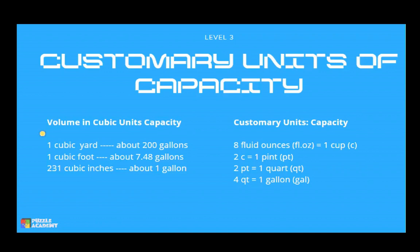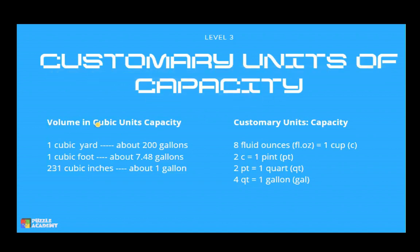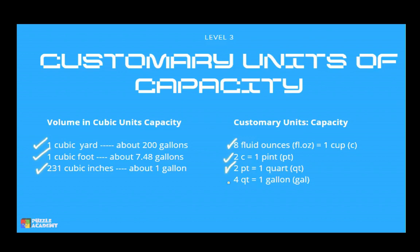The chart below shows how the customary units of capacity are related. Meron tayong volume in cubic units capacity: 1 cubic yard is about 200 gallons, 1 cubic foot is about 7.48 gallons, and 231 cubic inches is about 1 gallon. For the customary units of capacity: 8 fluid ounces equal 1 cup, 2 cups equal 1 pint, 2 pints equal 1 quart, and 4 quarts equal 1 gallon. Yan ang mga kailangan natin tandaan.